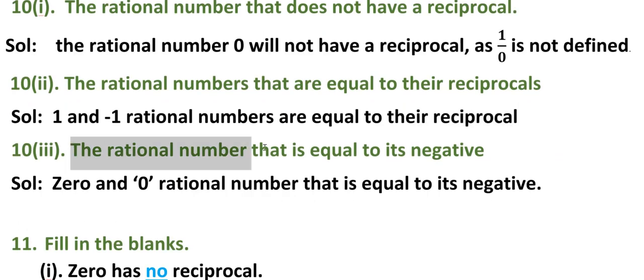Third one, problem 10(iii): the rational number that is equal to its negative. Only one rational number is there. The solution is 0. Zero is the rational number that is equal to its negative.